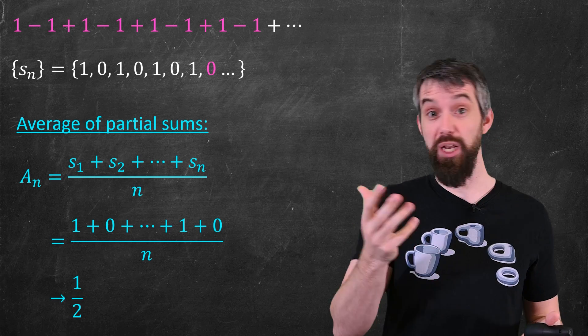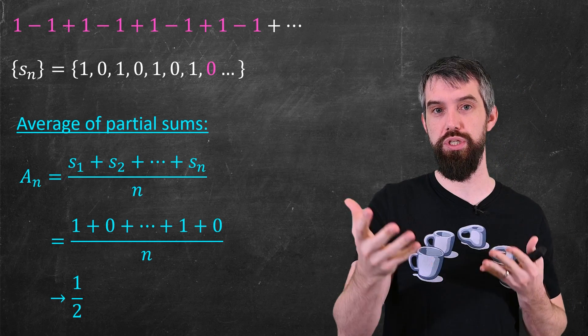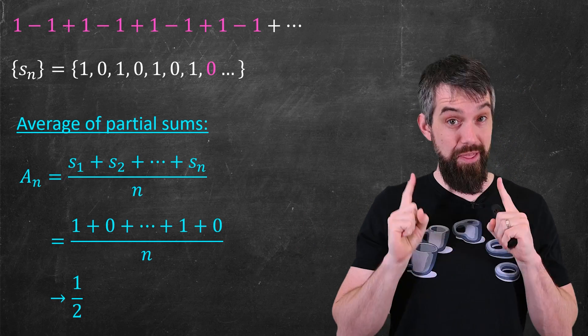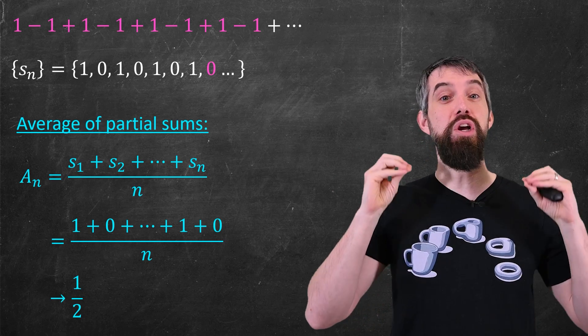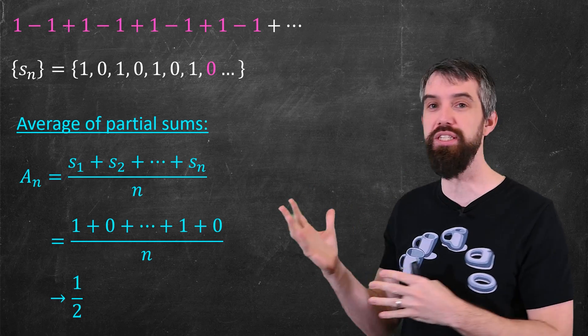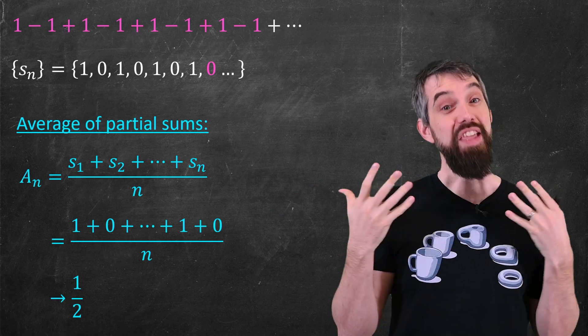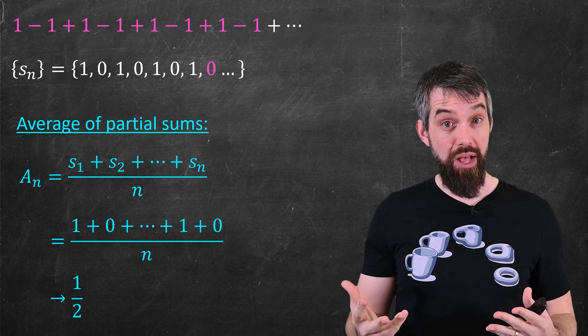When n is odd, there's a little bit more accounting to do. It isn't equal to exactly half, but it goes to the value of a half. So this is a divergent series in the ordinary sense that converges in the Cesàro summation sense. It converges to this limit of the average of the partial sums, as opposed to the limit of the partial sums themselves.